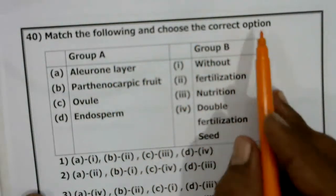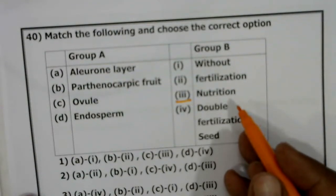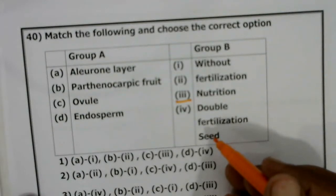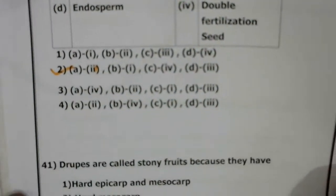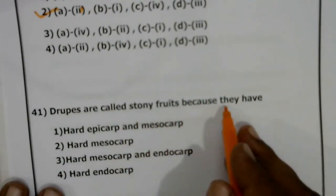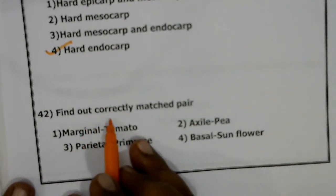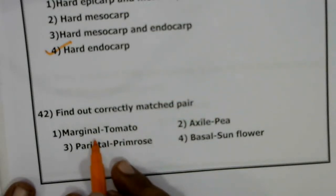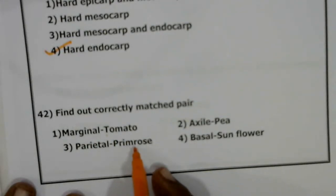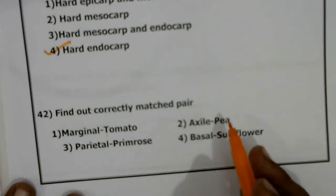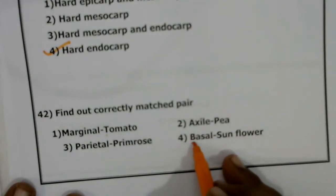Match the following: aleurone layer is used for nutrition — answer is A3; that is the second option. Drupes are called stony fruits because they have a hard endocarp. In correctly matched pairs: marginal placentation goes with tomato (actually a central example); parietal goes with primrose (actually free central); axile goes with lemon or China rose; basal placentation goes with sunflower.